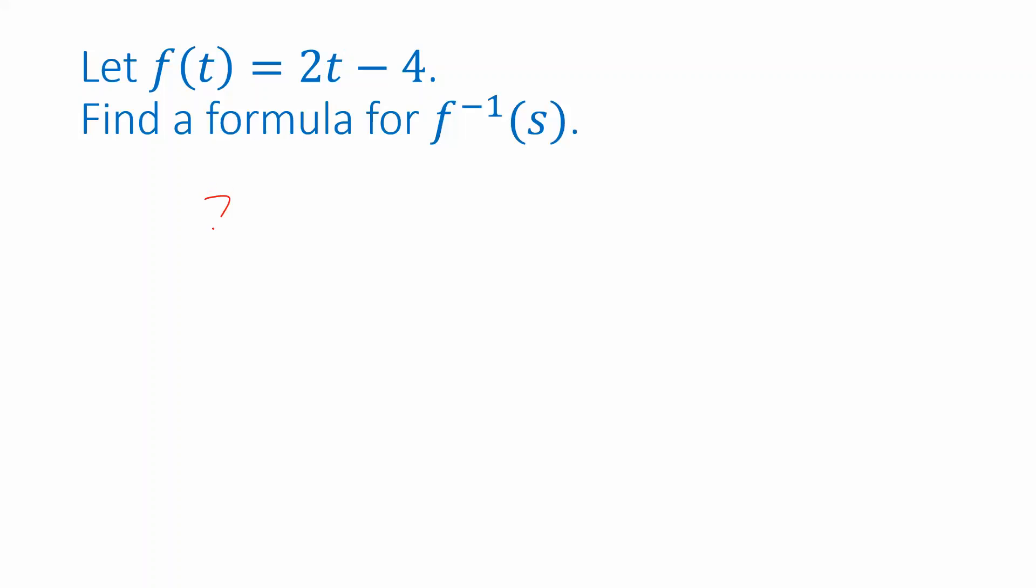So now I'm plugging something into the function for t, and when I evaluate that function I want to get s as a result. In order to figure out what to plug in for t I just have to isolate t doing some algebra. So I will add 4 to both sides and then divide by 2.